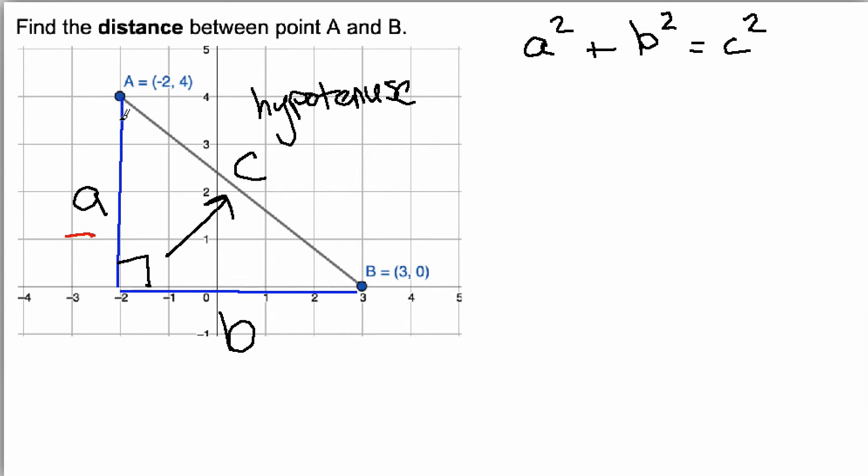A is the length from this point down to the right angle: 1, 2, 3, 4. So A is going to be equal to 4.